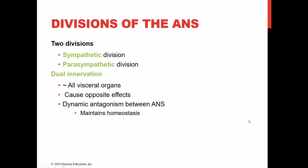The ANS has two divisions — sympathetic and parasympathetic — and practically every visceral organ receives innervation from both, which is called dual innervation. There are some organs that are strictly sympathetically innervated, which we'll discuss, but almost all visceral organs get input from both divisions. They cause opposing effects, creating a dynamic antagonism that maintains homeostasis and our ability to maintain relatively steady states despite changes in the external environment.